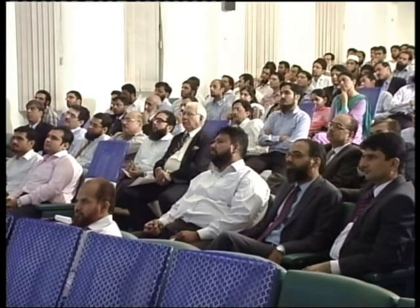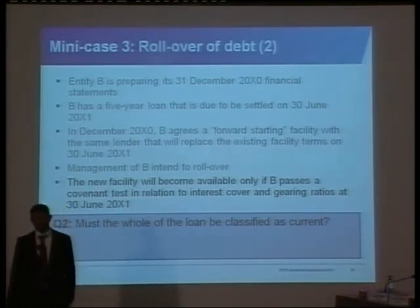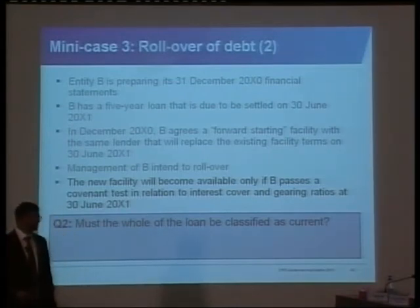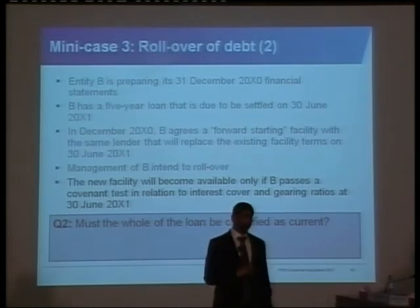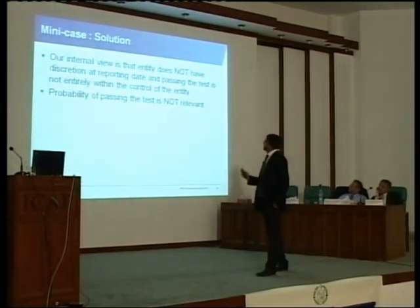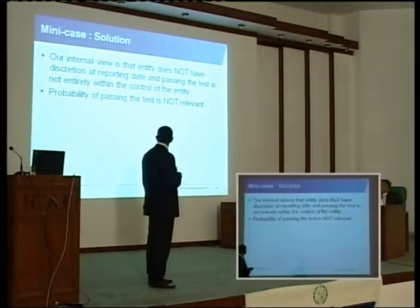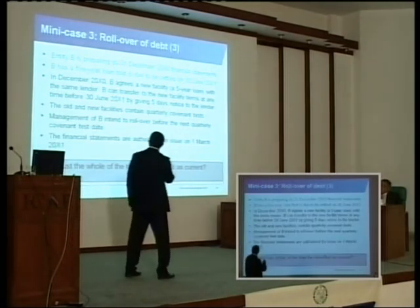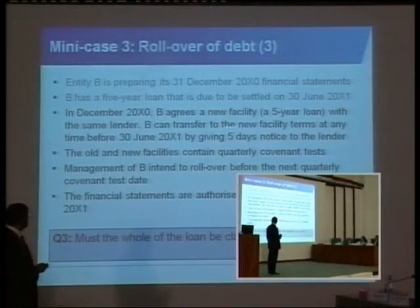Let's make it a little more complicated. Same facts, but the new facility will only become available if B passes a covenant test relating to interest cover and gearing ratios at 30th June. At 31st December, you're in a current position, and you can only get the new facility if you pass those ratios at 30th June. At balance sheet date, what's the reality? Current. The entity does not have discretion at reporting date, and passing the test is not entirely within its control. The probability of passing the test is not relevant.